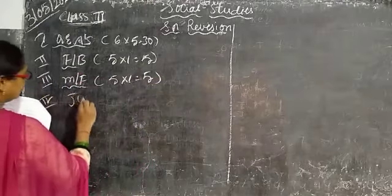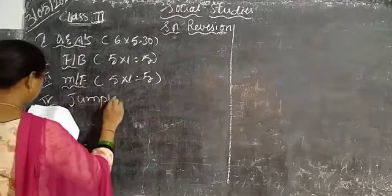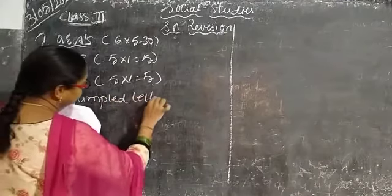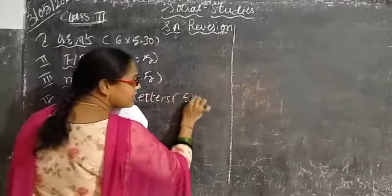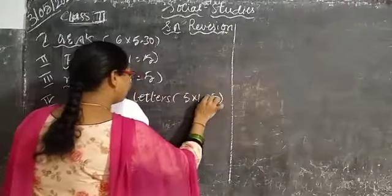Next, the fourth one. Jumbled sentences. So you can do this. These are also five blanks, five. Five blanks, okay children.